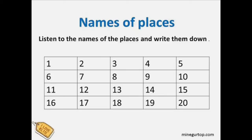3. Aberdeen. A, B, E, R, D, E, E, N. Aberdeen. 4. Dundee. D, U, N, D, E, E. Dundee. 5. Cardiff. C, A, R, D, I, F, F. Cardiff.